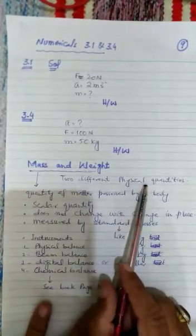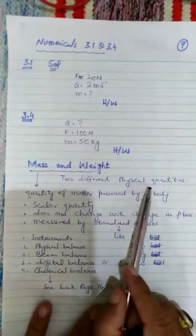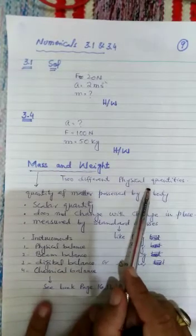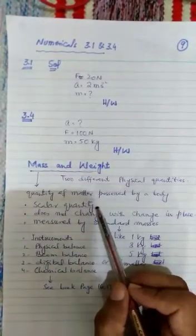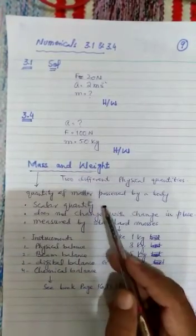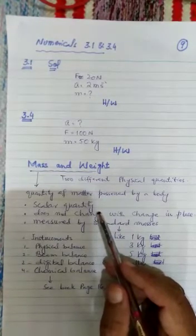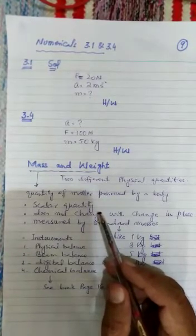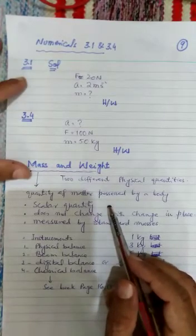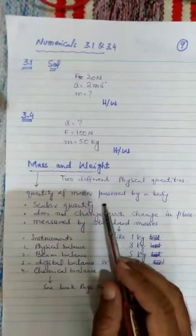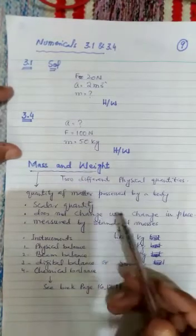So mass is basically quantity of matter possessed by a body. That is known as mass. If quantity of matter is smaller, mass will be smaller. If quantity of matter is greater, mass will be greater.